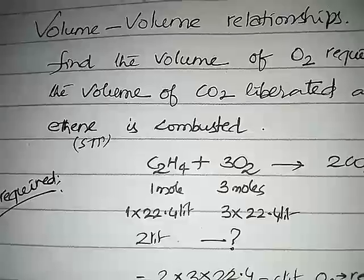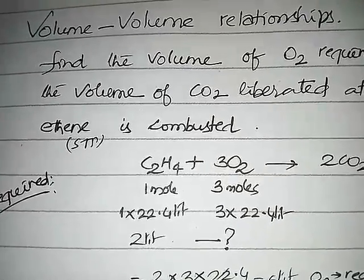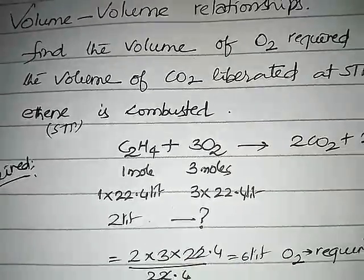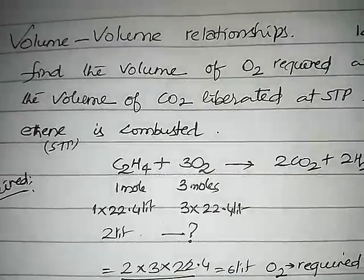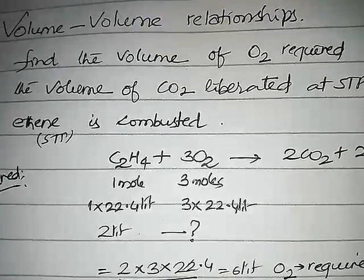So let's take the relation between C2H4 and O2, because C2H4 volume is given and oxygen volume they are asking. One mole ethene and three moles of oxygen are there in the balanced equation. One mole ethene means 22.4 liters, three moles of oxygen means three times 22.4 liters.